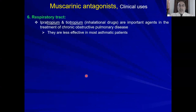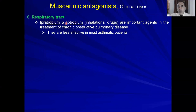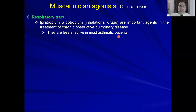On the respiratory tract: for treatment of chronic obstructive pulmonary disease or asthma, we use ipratropium or tiotropium — these are inhalational drugs. Why not atropine? These drugs are quaternary ammonium compounds, so they are charged and have no central effects, making them better tolerated. However, they are less effective in most asthmatic patients. For bronchial asthma specifically, the first-line drugs are beta-2 agonists such as salbutamol and terbutaline.